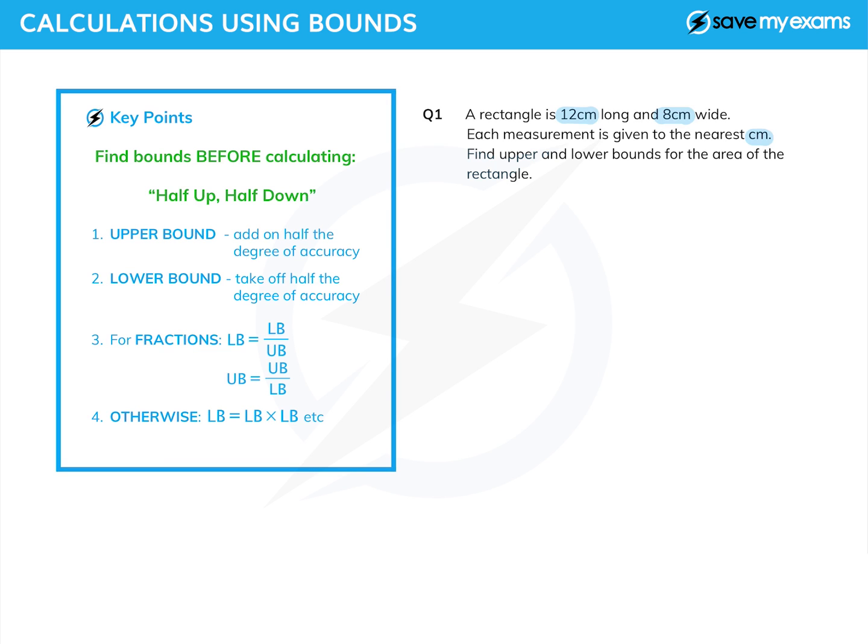Well we know the area is length times width, so let's look at the upper and lower bounds of the length and the width. So the length is going to be between, well a half down is 11.5, and a half up is 12.5. And the width: a half down is 7.5, and a half up is 8.5.